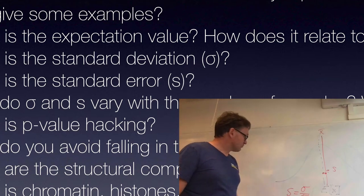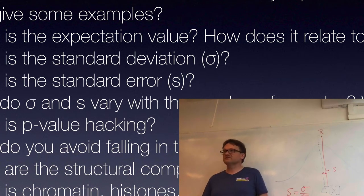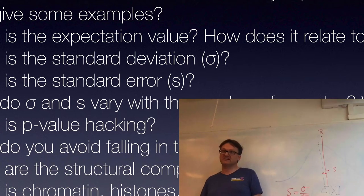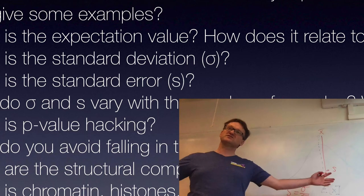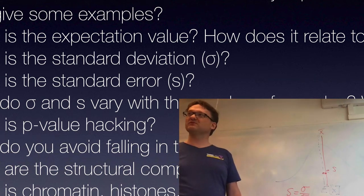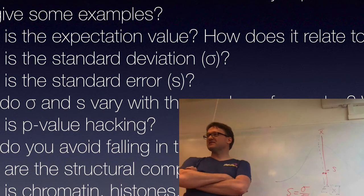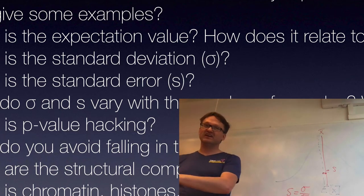There is a curse and a blessing here. The blessing is that we can improve things by increasing number of samples. The curse is that if you need ten times better data, you need a hundred times more samples. If you need a factor of a thousand better data, you need a factor of one million more data. The square root kills you — it's virtually impossible to collect enough data if you don't see anything at all. If the first data looks like pure noise, even a factor of 10 more data is not enough.